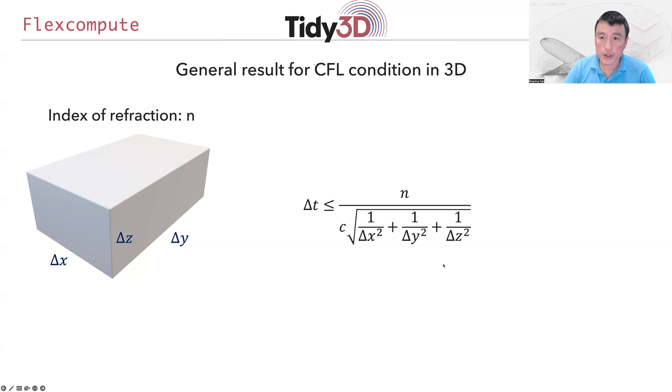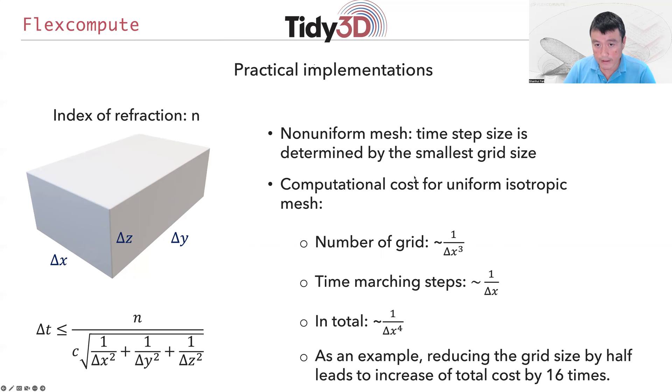Knowing the CFL condition is very important in thinking about various aspects of the FDTD simulation. When we use spatially non-uniform grids—for example, if your structure has small features, you may use finer spatial resolution there—the time step is actually determined by the smallest grid size. One would adjust the time step according to the smallest grid size of the system.